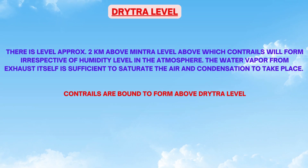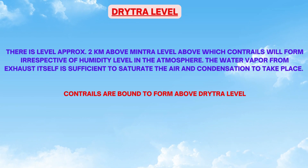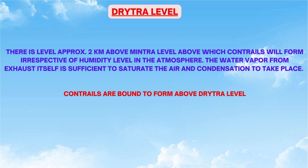Dritra level is a level approximately two kilometers above mintra level, above which contrails will form irrespective of the humidity level in the atmosphere. Above dritra level, the water vapor from the exhaust itself is sufficient to saturate the air and cause condensation. So contrails are bound to form above dritra level.